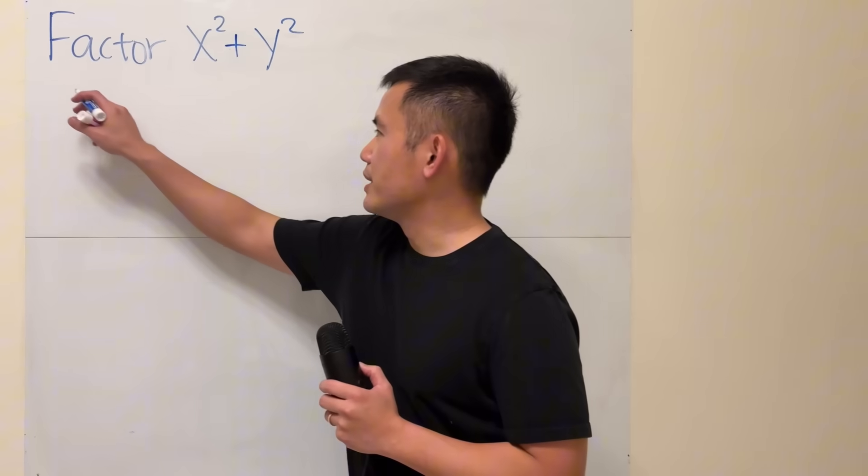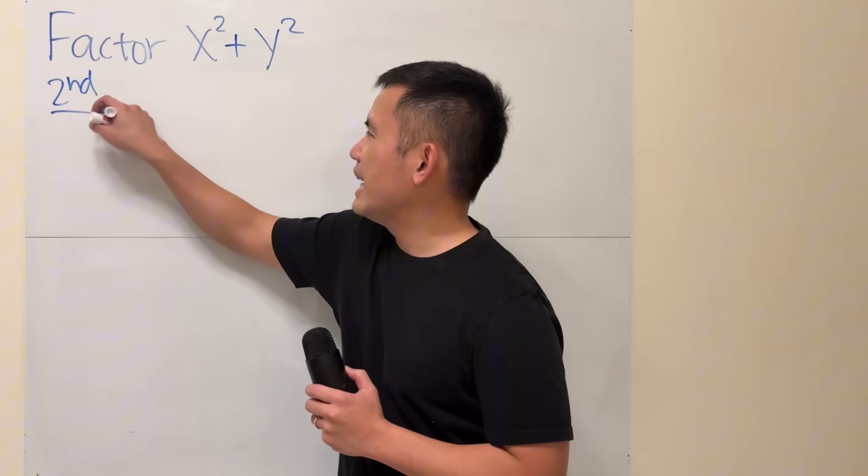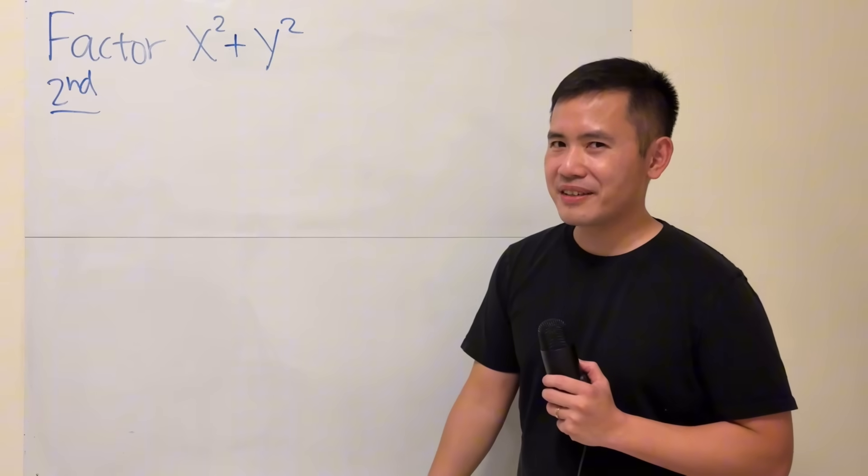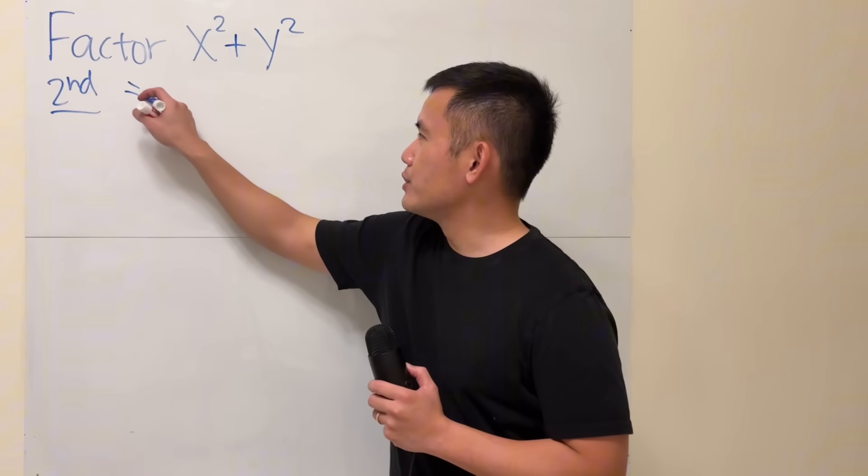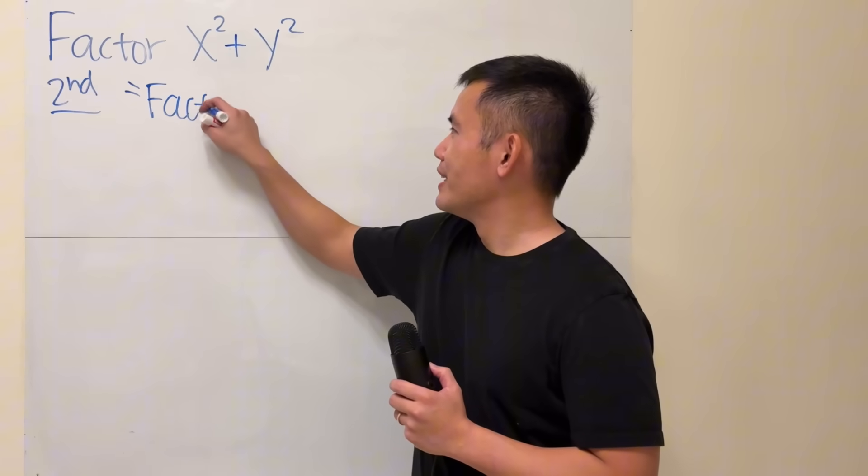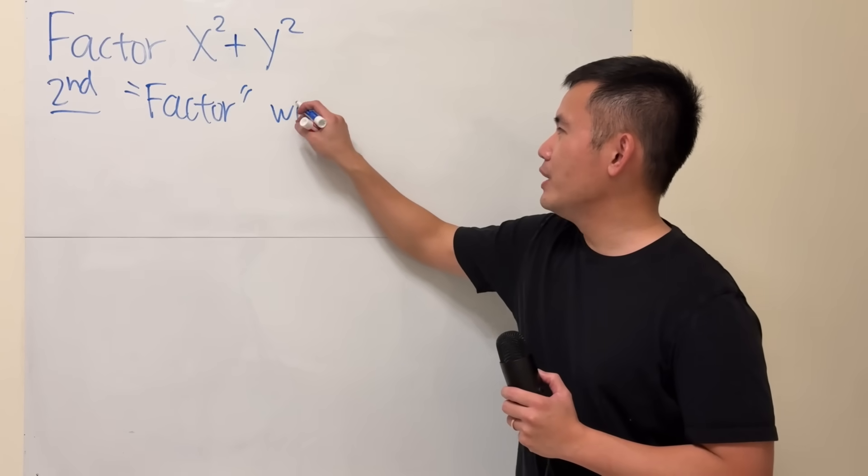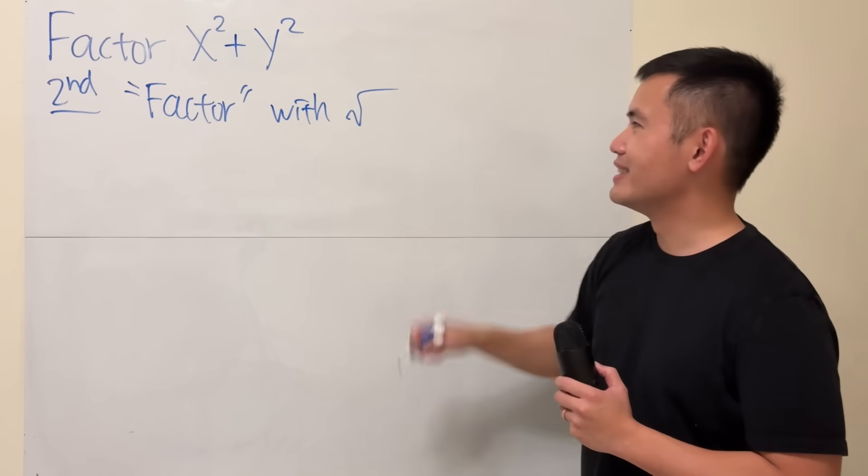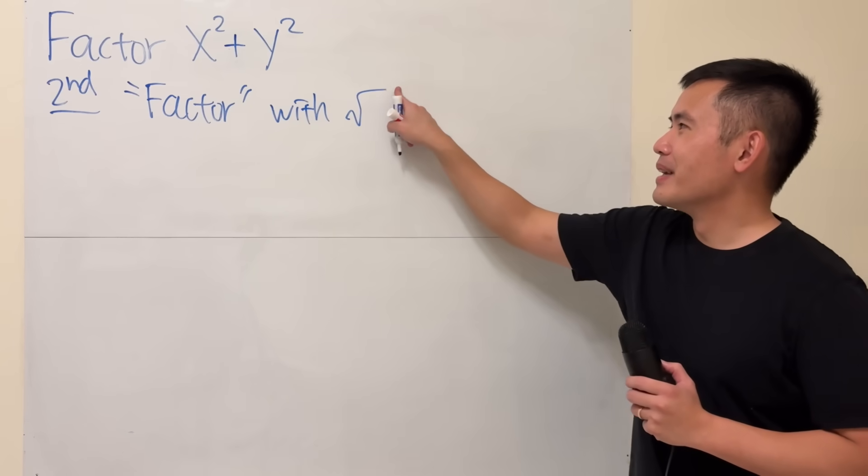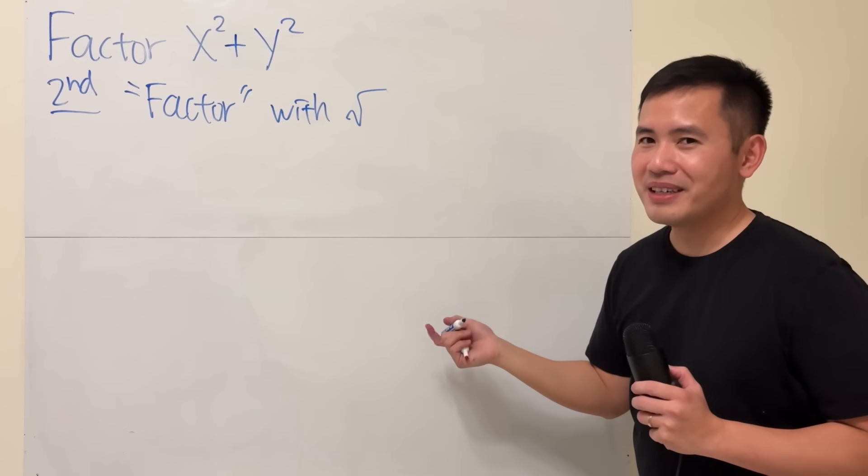So, this is how we are going to take care of this. And I'm not really going to call this factor in the usual sense. So, I will just call this factor with the quotation mark. And I also say with square root. The reason I said this is because when we want to say factoring, we want to break it down as a product of polynomials with less degrees.